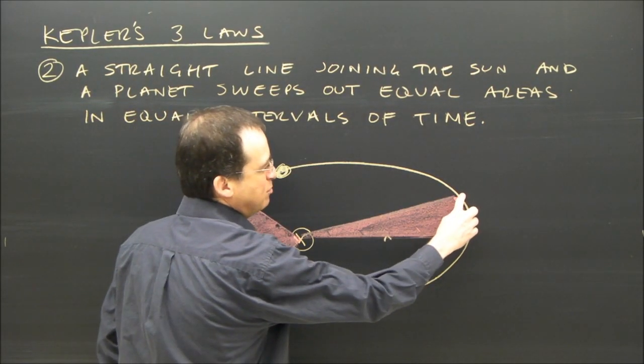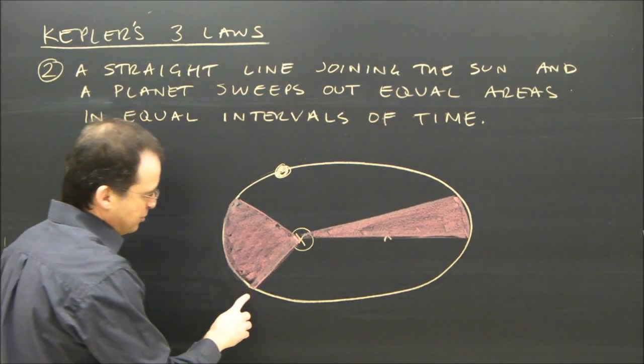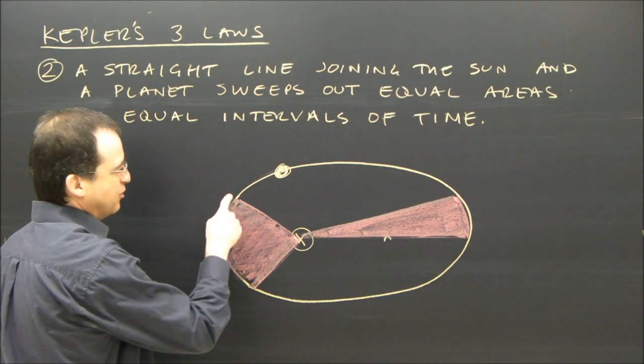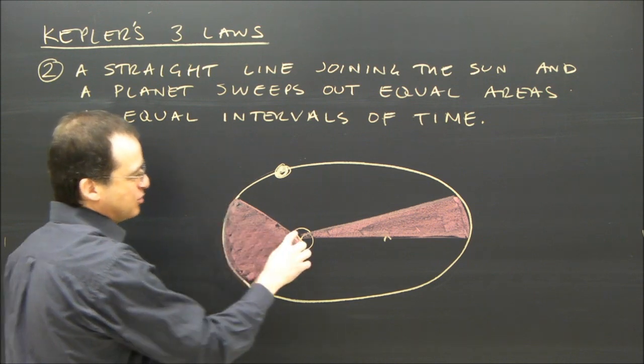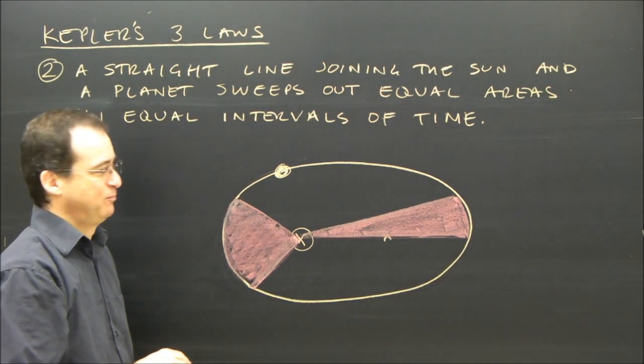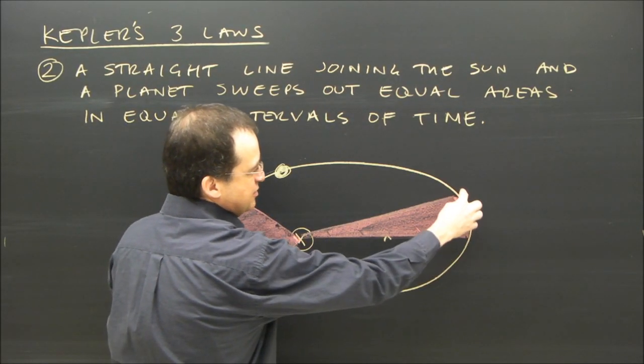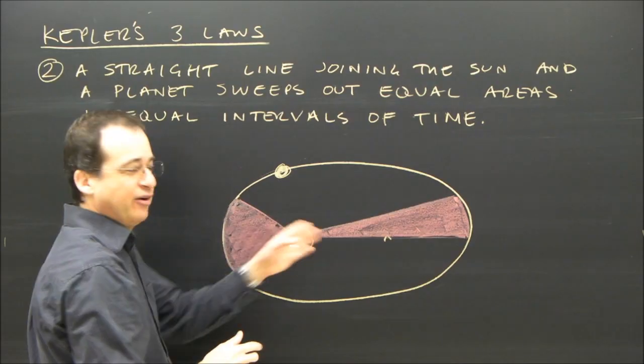What that means is if it took one month for the earth to go from here to here in its orbit, it would take one month for the earth to go from here to here in its orbit. And he noticed that this area was exactly the same as this area, which meant since this line was so much longer,